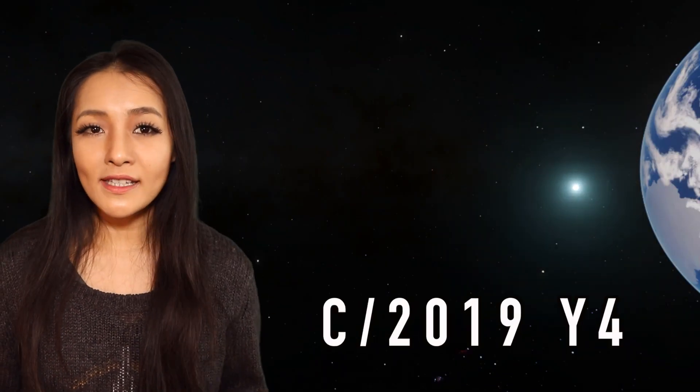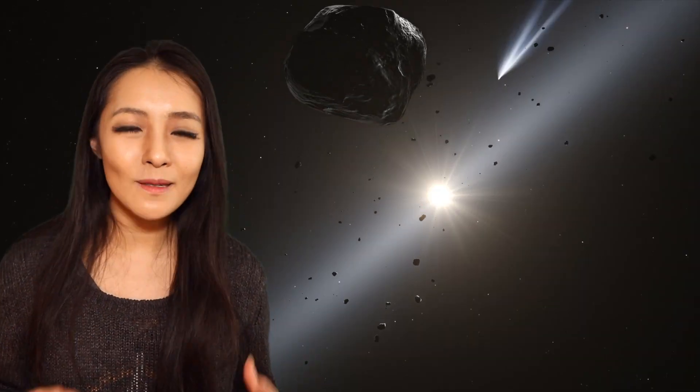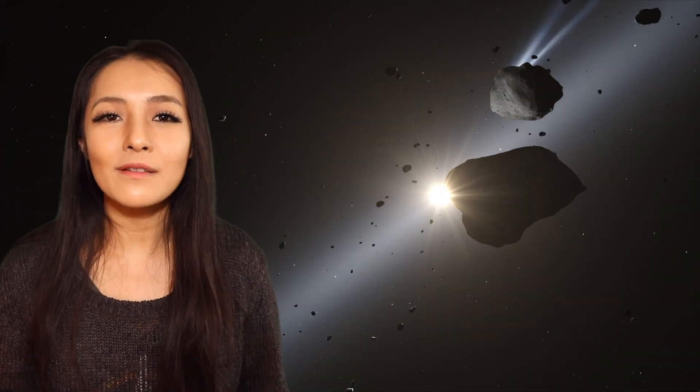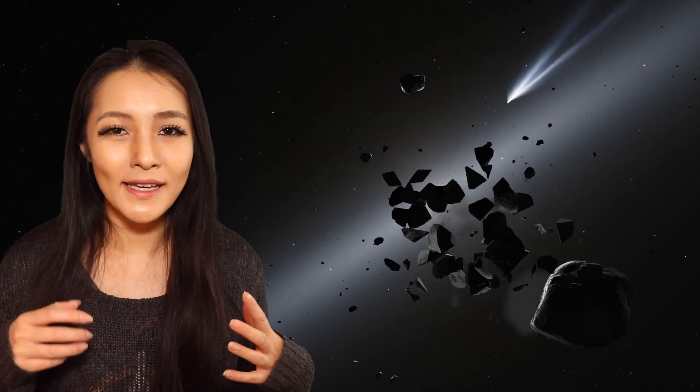It's also called C2019Y4, and its currently green colour arises from emissions of diatomic carbon with a greenish-yellow tail. As the comet approaches the Sun, its tail will get longer and brighter as more material is evaporated off by the heat. But to survive long enough for it to be visible as a bright light in the sky, it will need to hold on to its ice.